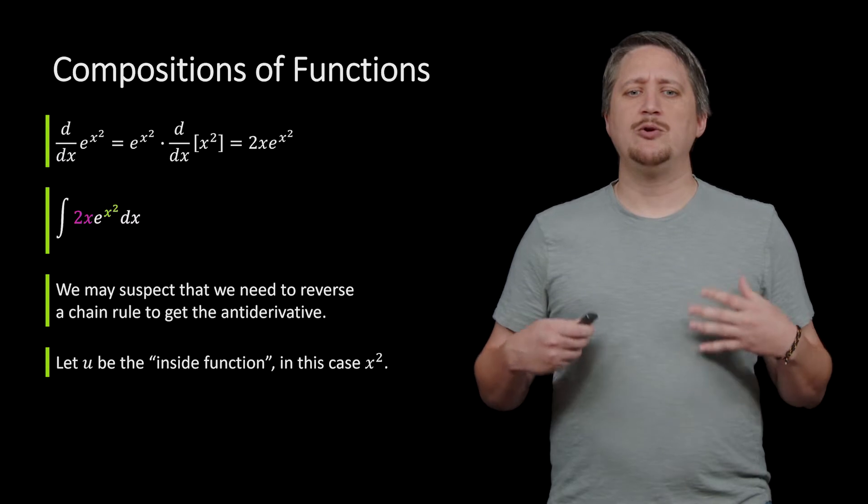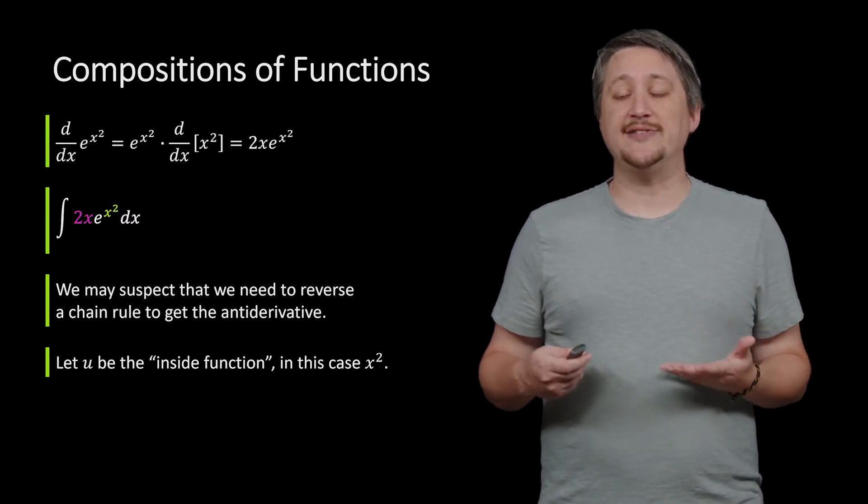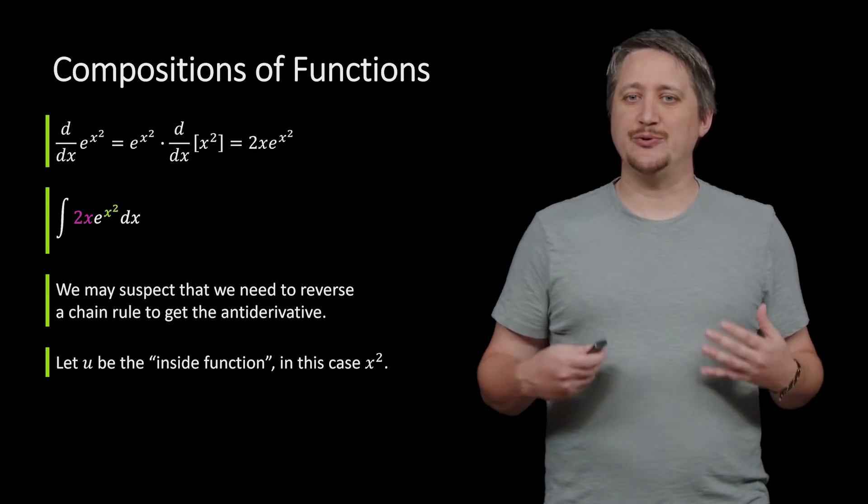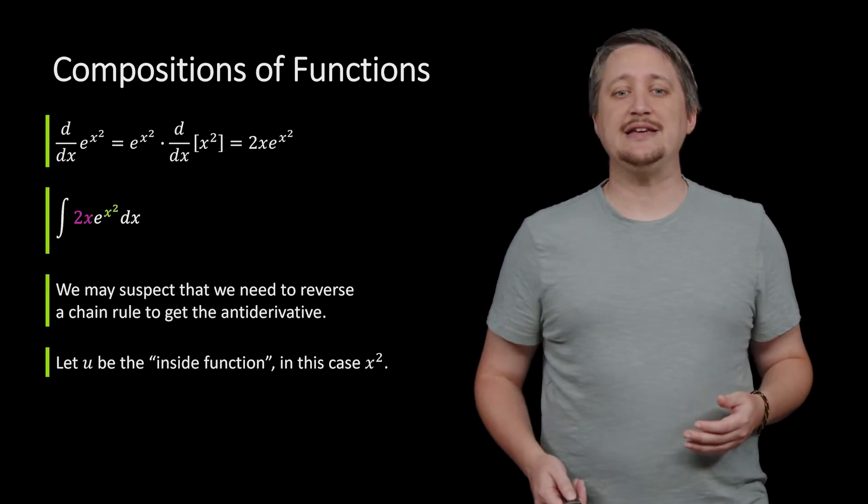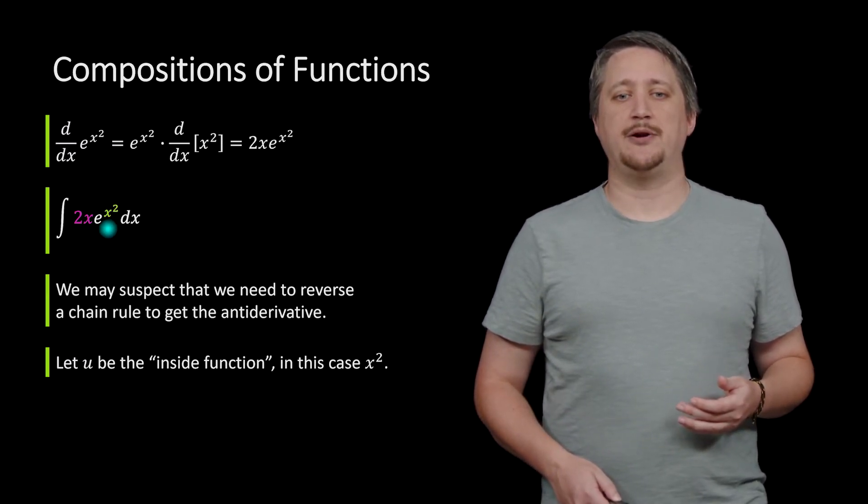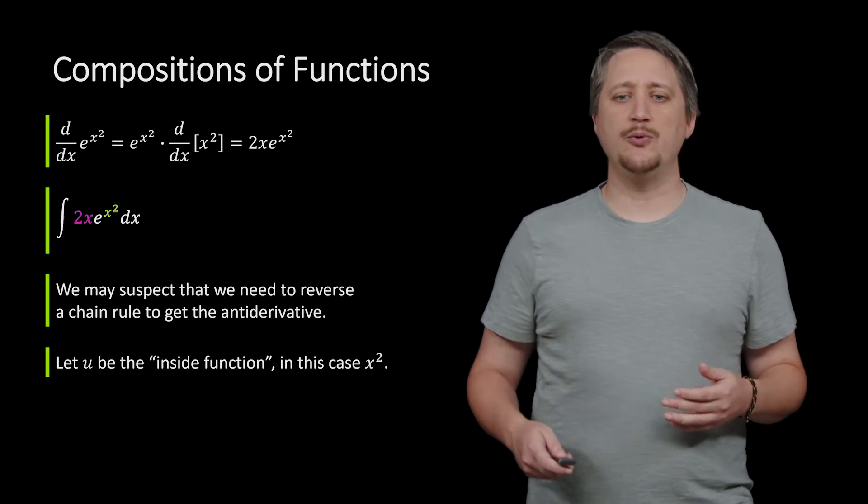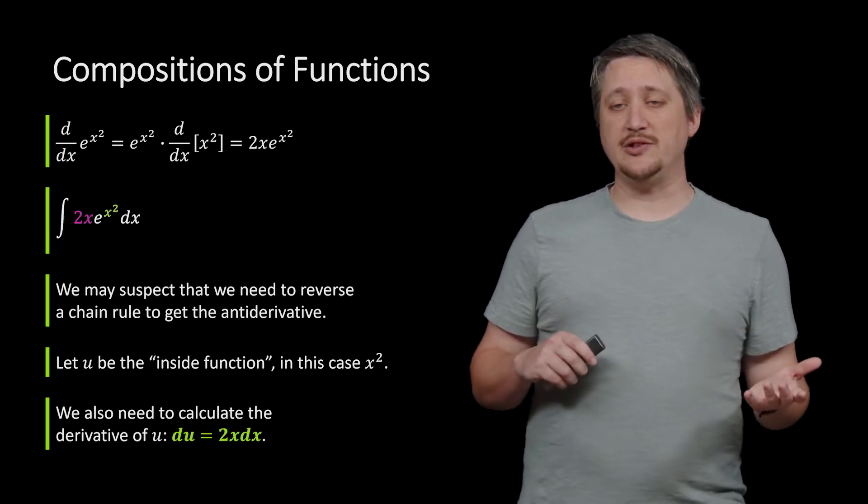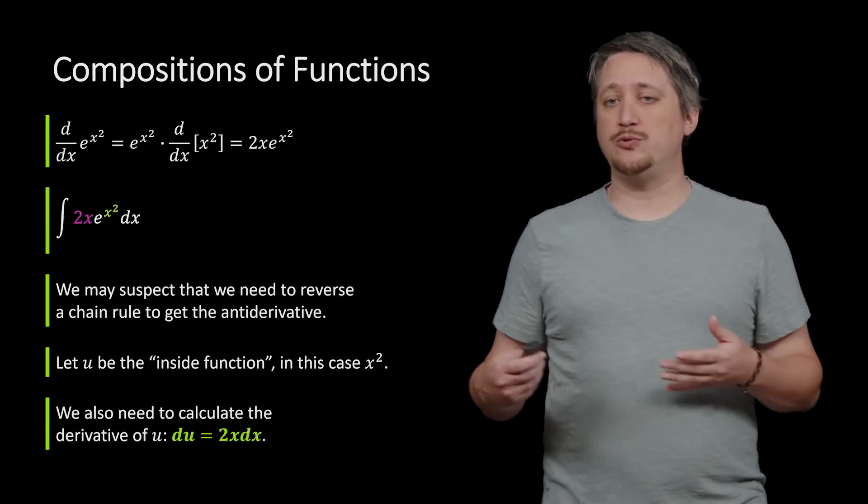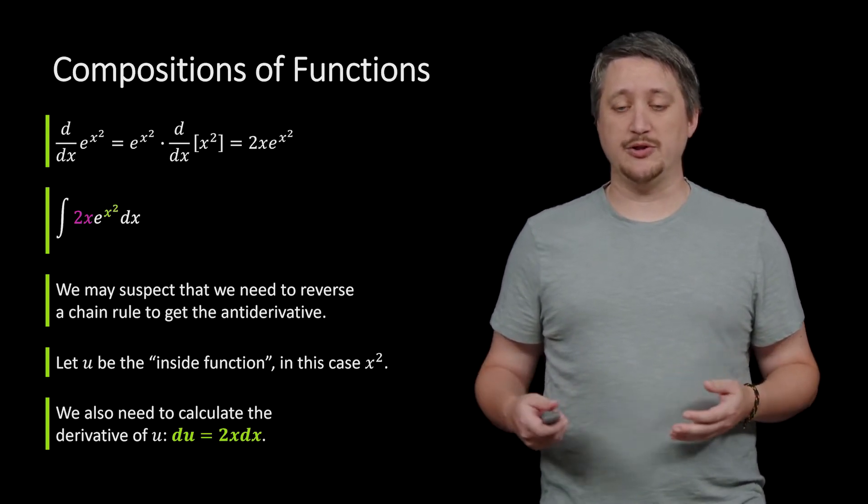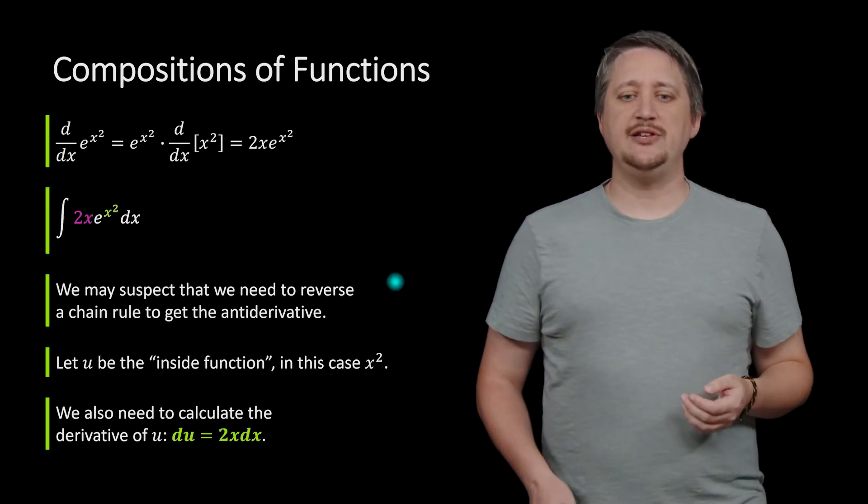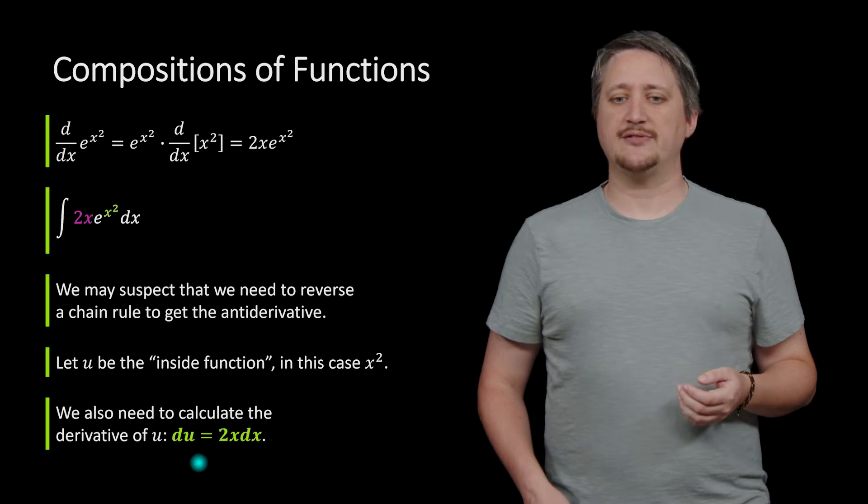So to do that, we start by letting u be that inside function, the thing whose derivative is also there. So in this case, that x squared, the inside piece up here. So when we do that, we also need to calculate du, meaning that we need to take a derivative of u with respect to whatever variable it is, so in this case with respect to x, and this gives us that du being 2x dx.